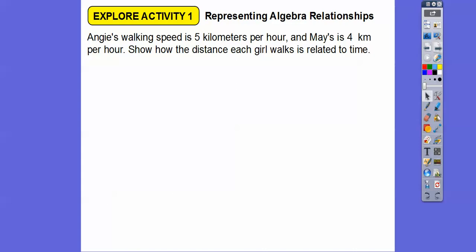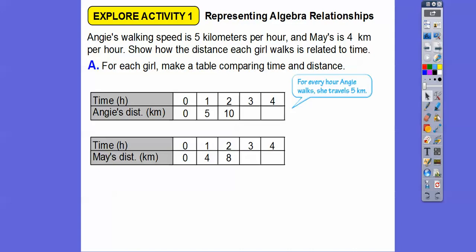Angie's walking speed is five kilometers per hour, and May's walking speed is four kilometers per hour. Show how the distance each girl walks is related. So, for each girl, we're going to make a table and compare the times and distances.